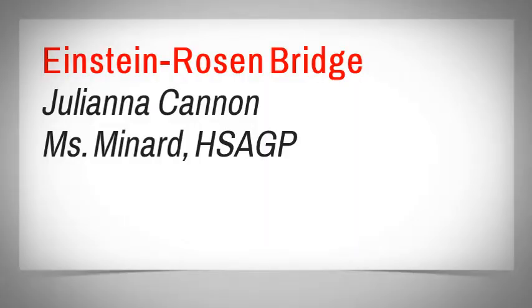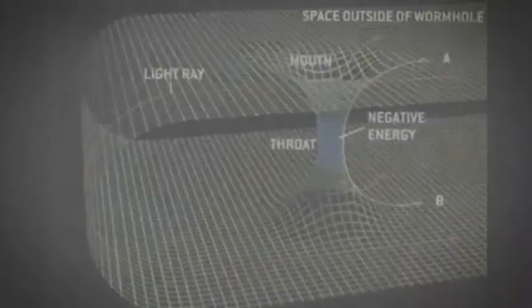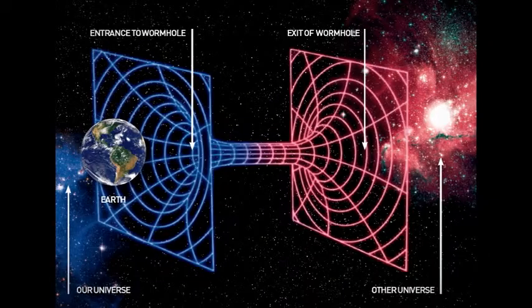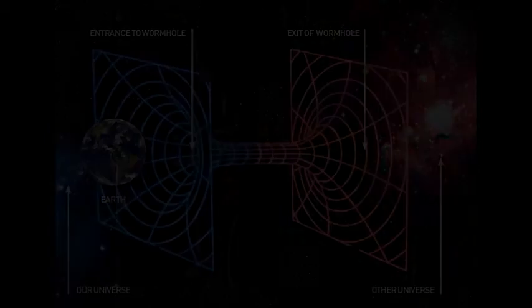The term Einstein-Rosen bridge may seem foreign, but you've likely heard its alternative name: a wormhole. According to the Oxford Dictionary of English, a wormhole is a hypothetical connection between widely separated regions of space-time. In layman's terms, a wormhole is a shortcut from one point in space and time to another.